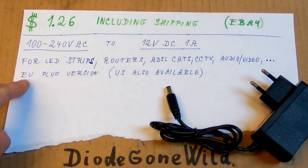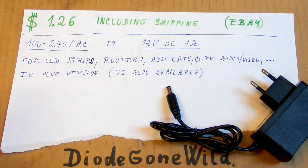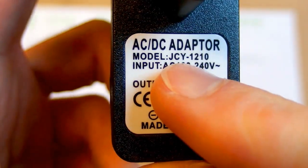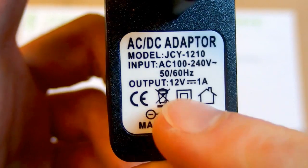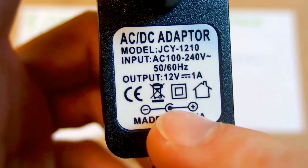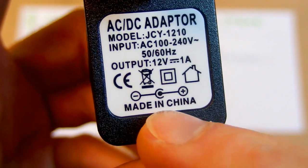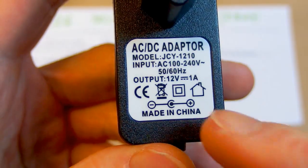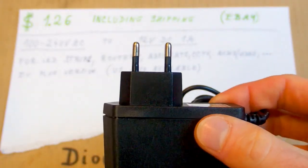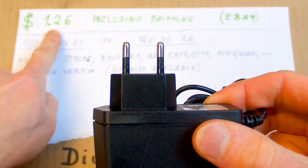And this one has a European plug but it also comes with a US plug. The label says some model number, the input voltage, output voltage. Here it says it's center positive and made in China. 12 volt is a very common voltage so it can have so many uses. But let's take a look at it and see how dodgy it is for such a low price.